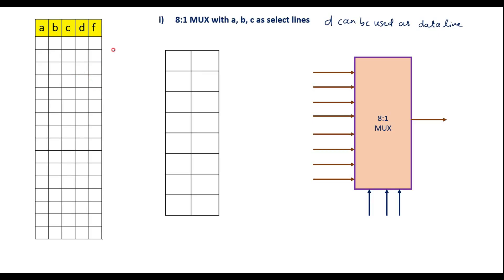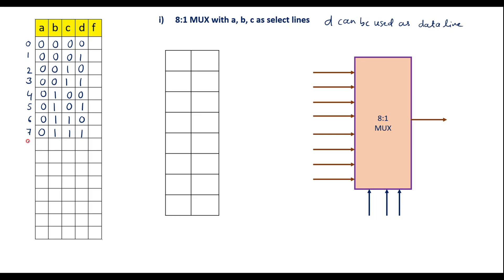For understanding purposes, I will first write all possible inputs with four variables A, B, C, D. Minterm 0 is 0000, 1 is 0001, 2 is 0010, 3 is 0011, 4 is 0100, 5 is 0101, 6 is 0110, 7 is 0111, 8 is 1000, 9 is 1001, 10 is 1010, 11 is 1011.